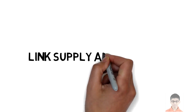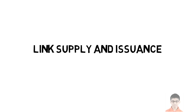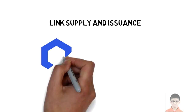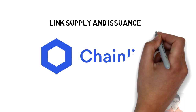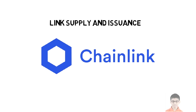LINK has a maximum supply of 1 billion tokens. 35 percent of those were sold during the ICO in 2017. About 300 million are in the hands of the company that founded the project. In contrast to many other crypto assets, LINK has no mining or staking process that increases its circulating supply.